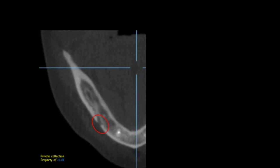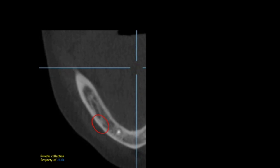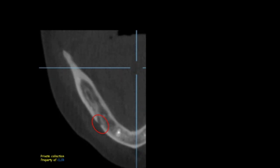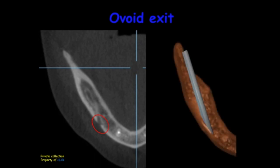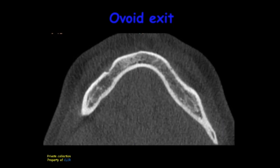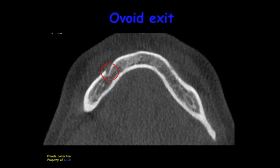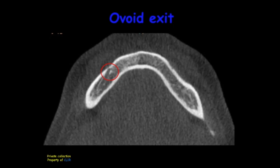If we look carefully at the axial section, we can see that the inferior alveolar canal approaches the buccal cortical of the mandible and exits directly through the mental foramen — this is why the foramen is ovoid. The path can be illustrated using a straw cut directly near the buccal cortical, and the section will be ovoid. Another case on axial cuts shows the same direct exit through an ovoid mental foramen.